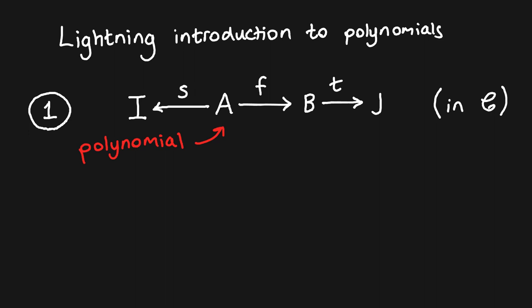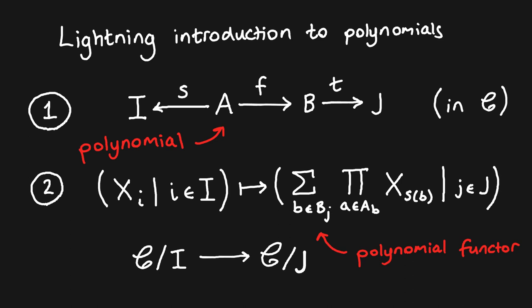We're going to see how you can build a polynomial like this from a natural deduction rule. We can take polynomials in any locally Cartesian closed category, which intuitively means we have a notion of dependent sum and dependent product. In particular, the locally Cartesian closed categories we will consider are the presheaf categories over the categories of contexts. Every polynomial in C induces a functor between slice categories of C, called a polynomial functor. The name comes from its familiar shape, suggestive of a polynomial function — that is, a sum of products of variables. Polynomials induce polynomial functors in the same way that coefficients induce polynomial functions, though here we also have a notion of variable re-indexing.